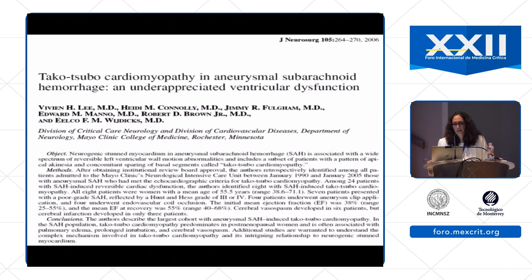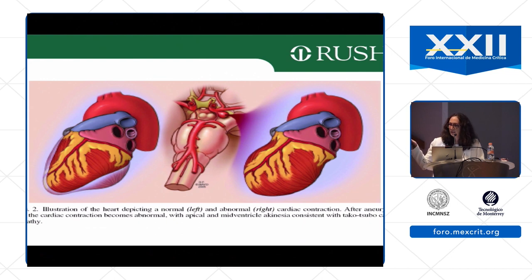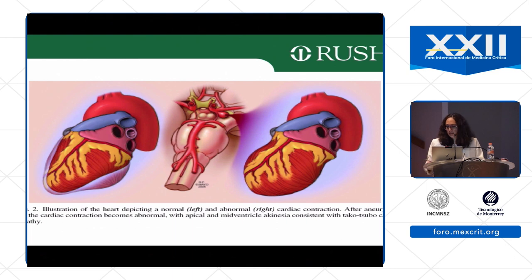Takotsubo's cardiomyopathy — named after the Japanese octopus trap — is not uncommon in subarachnoid hemorrhage. You see apical and midventricular akinesia. These patients tend to be relatively hypotensive because, normally, the body drives blood pressure up in the setting of elevated intracranial pressure; Takotsubo patients may sit with normal blood pressure. Get an echo — EF can drop as low as 10% and may require support. They typically recover, with ejection fraction improved on repeat echo at one to two weeks.